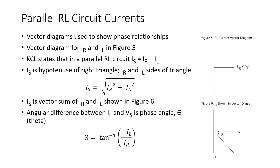It is difficult to illustrate the phase differences between IR and IL by sketching sine waves as seen in Figure 4, so we use vector diagrams to show this phase relationship. Referring to the vector diagram of Figure 5, IR along with VS are used as the reference point at the zero degree position. IL is placed at negative 90 degrees on the vector diagram because IL happens 90 degrees after IR and VS.